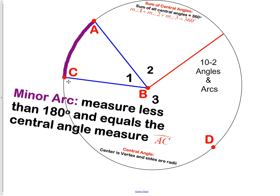Next we have the minor arc. The minor arc measures less than 180 and equals the central angle measure. An example here would be that angle 1 or central angle 1 is 50 degrees. That would mean minor arc AC is also 50 degrees. The minor arc and the central angle that makes it are always equal in measure.